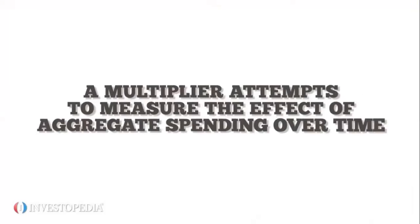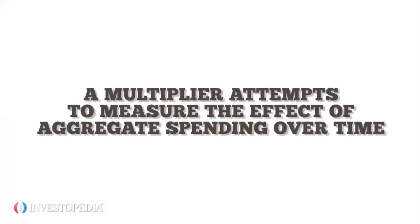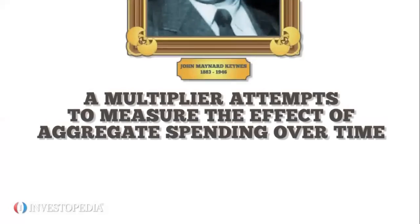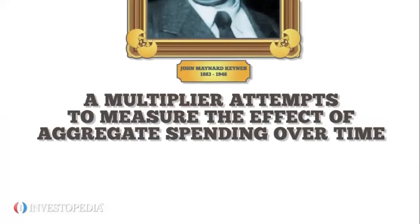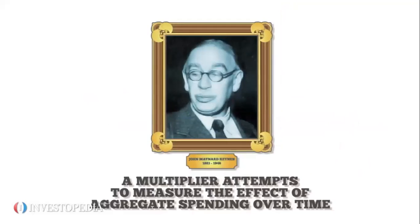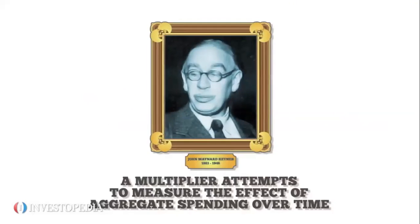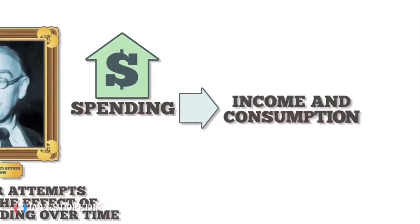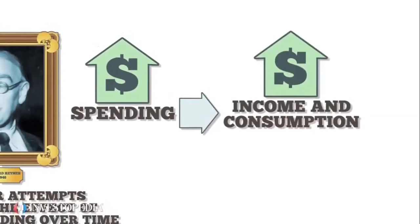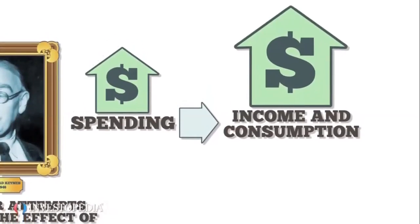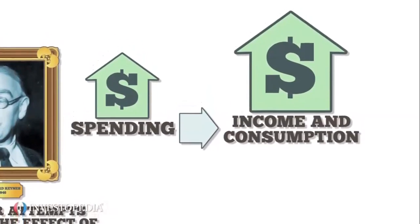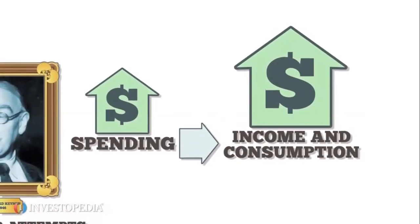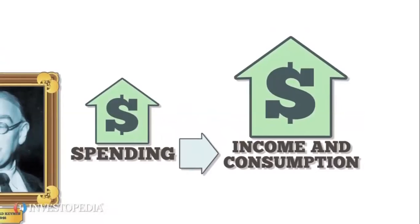A multiplier attempts to measure the effect of aggregate spending over time. The multiplier comes from Keynesian theory, which suggests an increase in spending leads to an increase in income and consumption exceeding the initial spending increase. The premise is that money spent by a government or business multiplies in an economy.